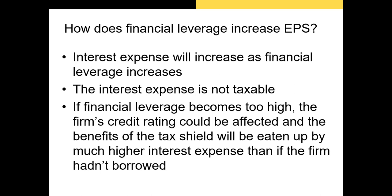If a firm starts from a very low level of financial leverage, increasing borrowing can benefit the firm by increasing the interest expense and thus the tax shield — earnings per share will increase because interest expense is not taxable. However, if a firm becomes too highly levered, its credit rating will suffer, borrowing costs will rise sharply, and any tax benefit will be consumed by the higher interest expense.